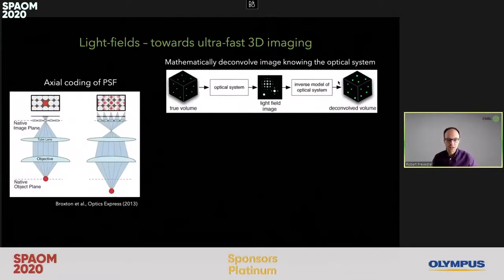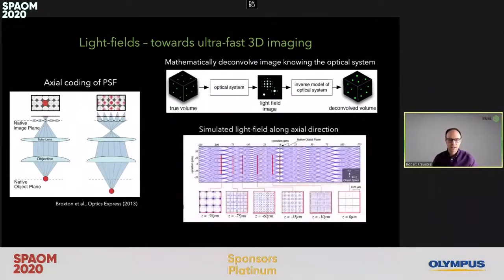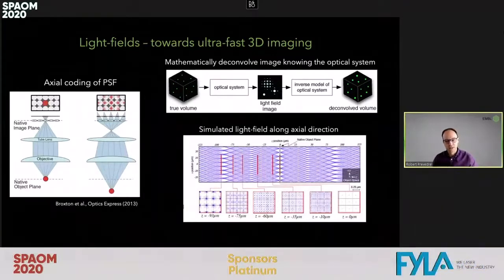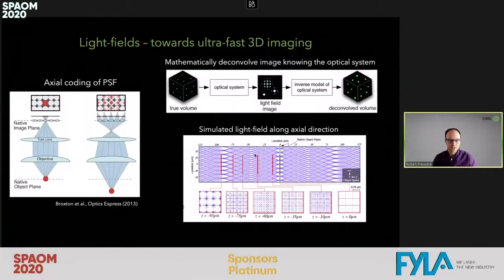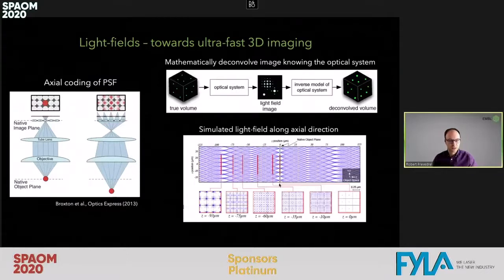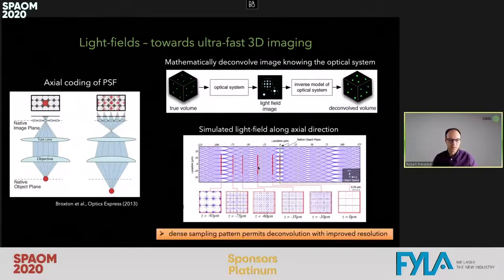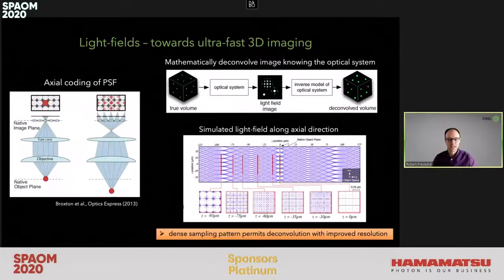This approach allowed reconstruction and deconvolution of volumes at a higher resolution. The Stanford group simulated the light field rays as they propagate through the volume, and off the native focal plane, there is a dense sampling of space by the light rays. This actually permits 3D deconvolution with improved resolution — better than what you would have in standard light field microscopy.